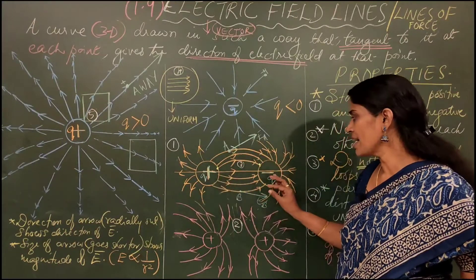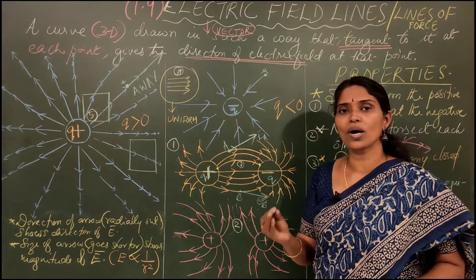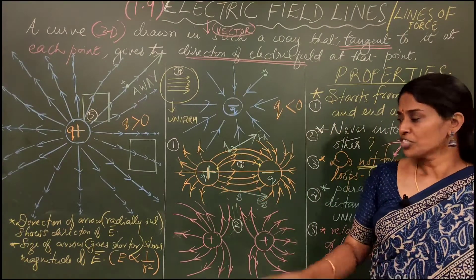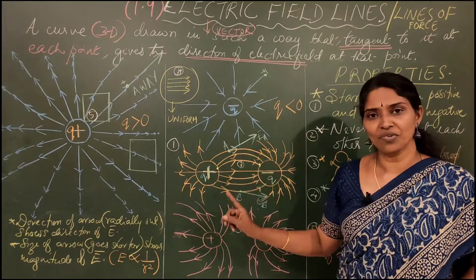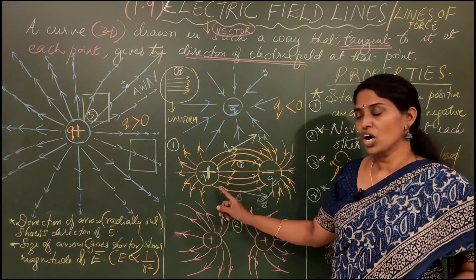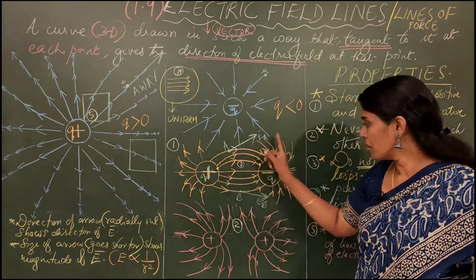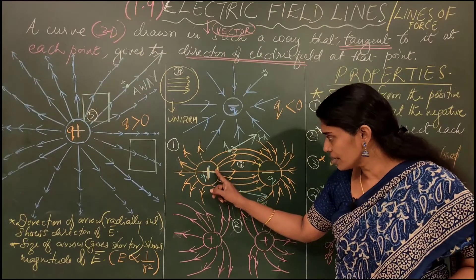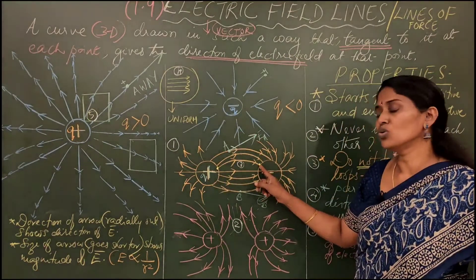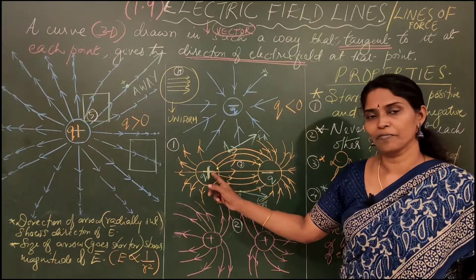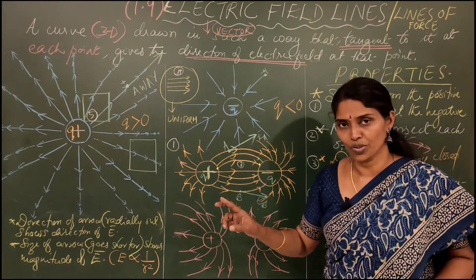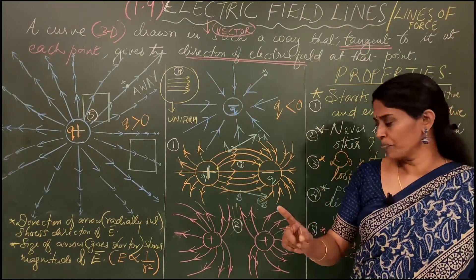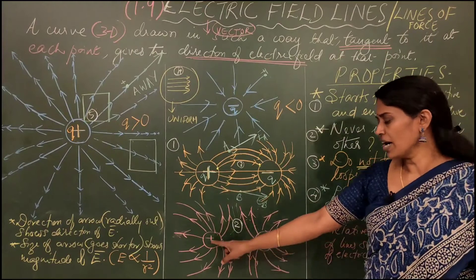If you have a positive charge and a negative charge of equal magnitude separated by some distance, it is called an electric dipole. For an electric dipole, all electric field lines start from the positive charge and end at the negative charge. Also, the lines never return back or form a loop.